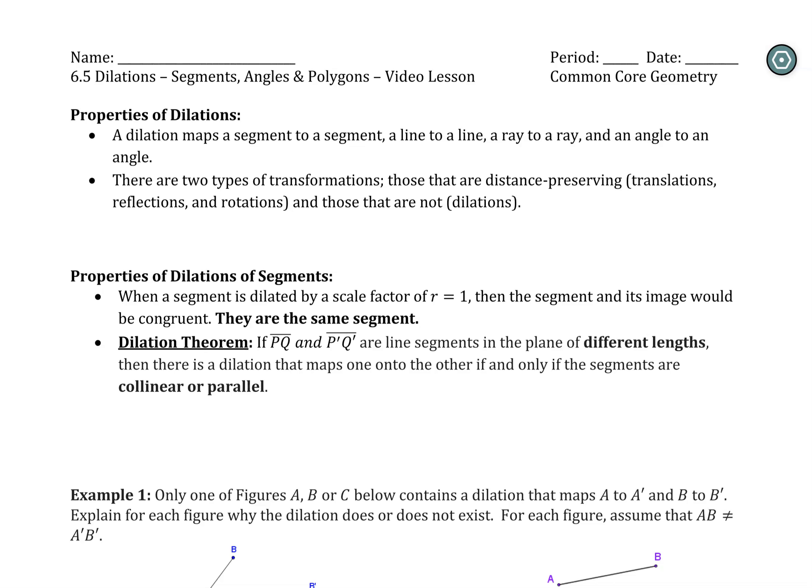Video lesson 6.5: Segments, Angles, and Polygons. We're going to talk about the properties of a dilation with respect to all of these different types of things. For the most part, nothing changes in terms of what we've been talking about — we're just going to apply these things and develop them a little bit more. Then we're going to take these polygons and show how to dilate things on a graph using graph paper.